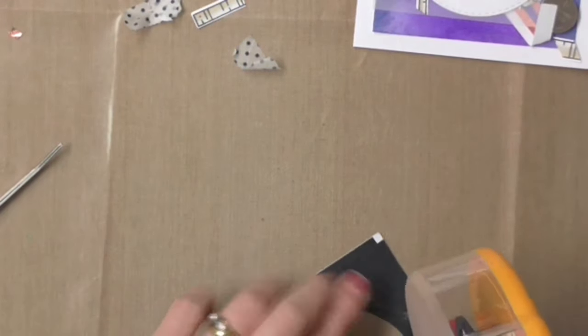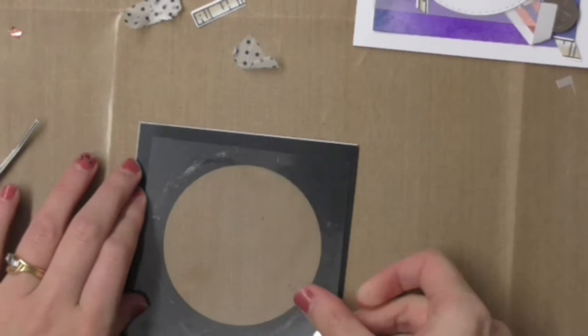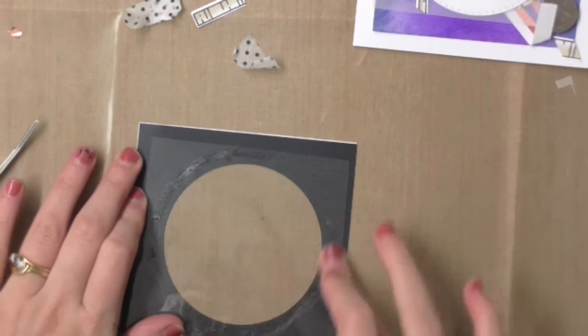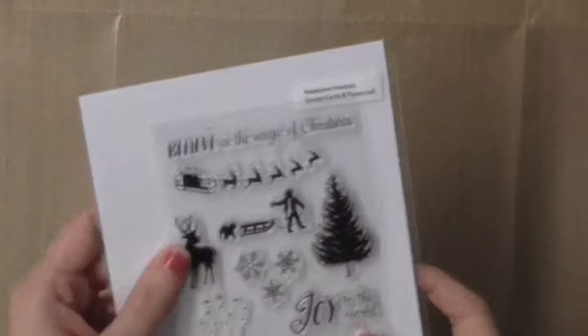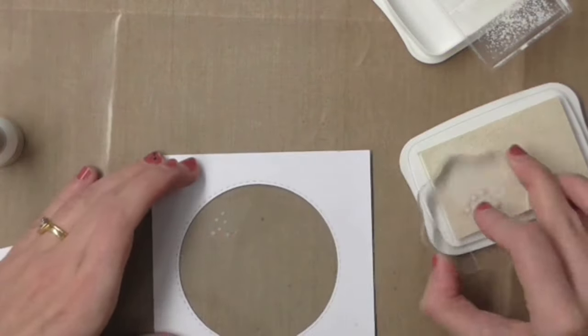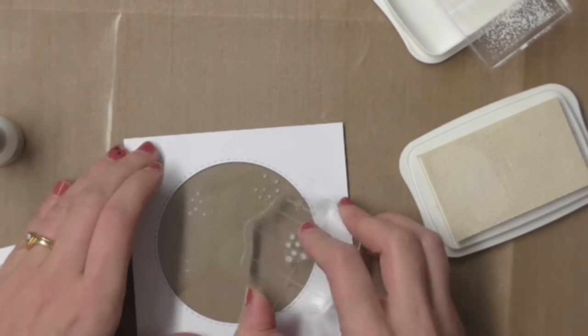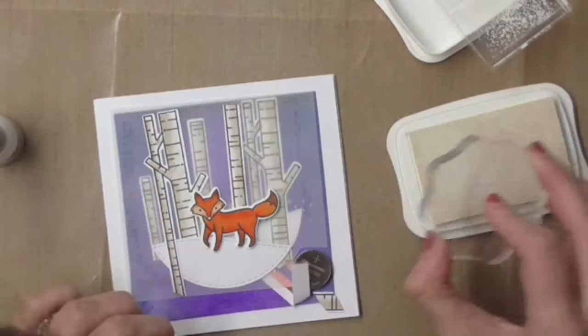Now because I want to do a shaker card I'm putting a piece of acetate behind this front panel and I thought I would add some snow to the acetate.